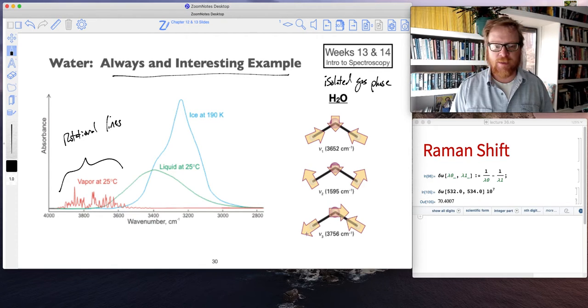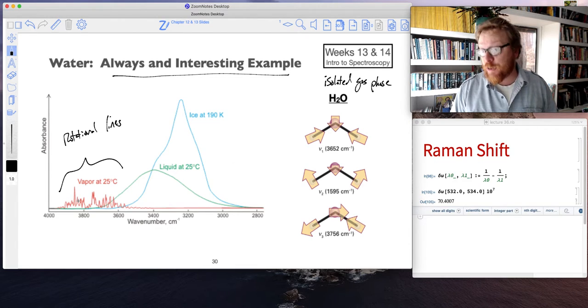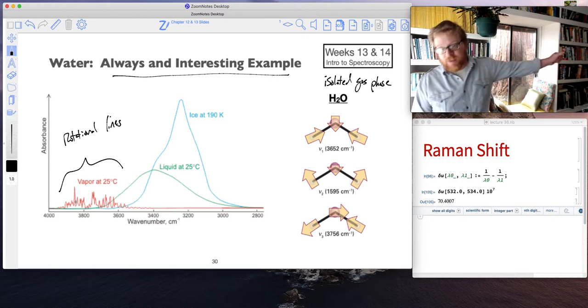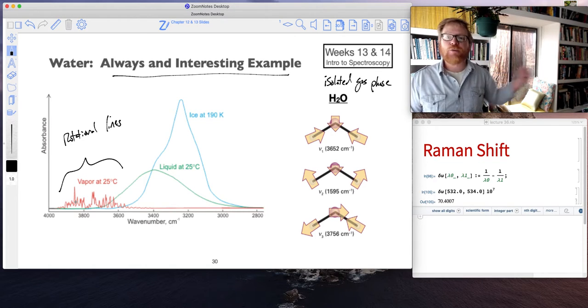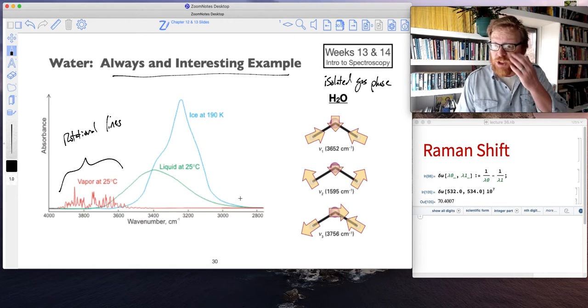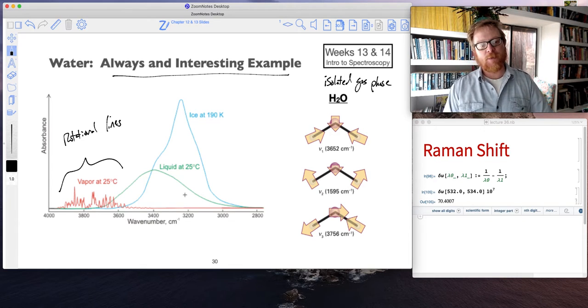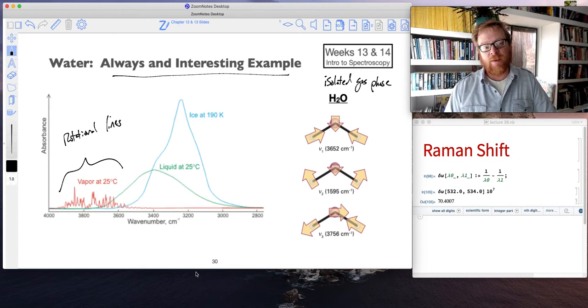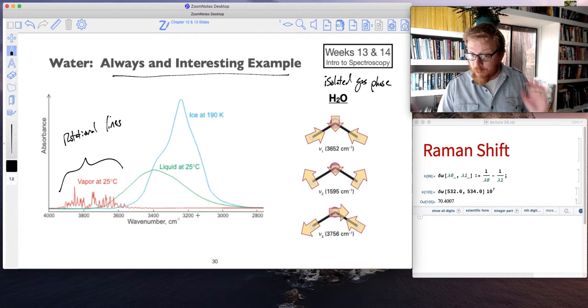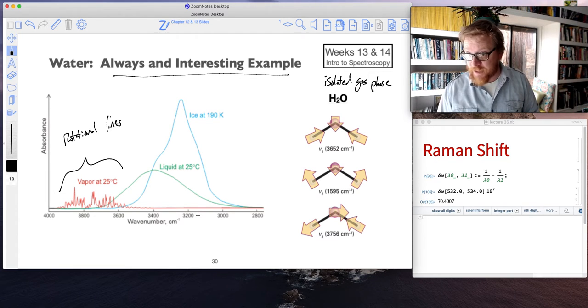The bend we're not even seeing on this scale. For water vapor, those will occur at higher energies. Those bonds have to vibrate at a higher frequency. They're generally, as a vapor, not really being influenced by anything else, assuming we're in the ideal gas regime where other neighboring water molecules aren't influencing each other.